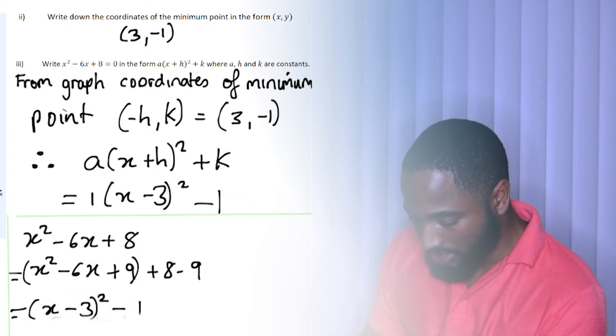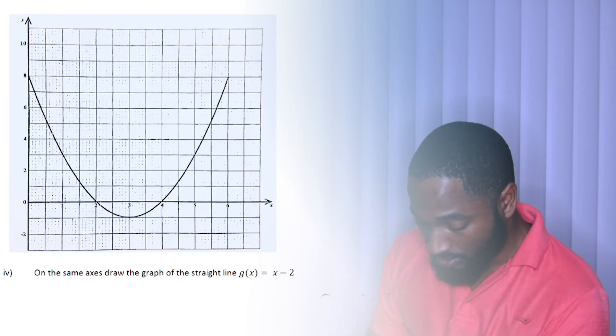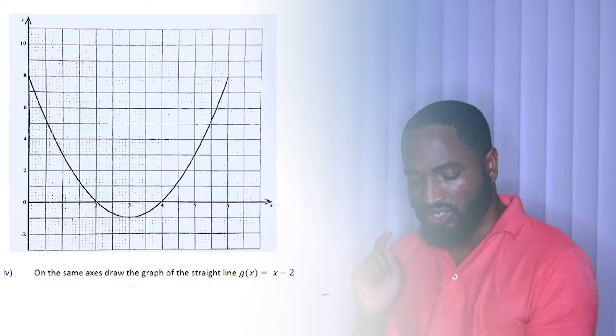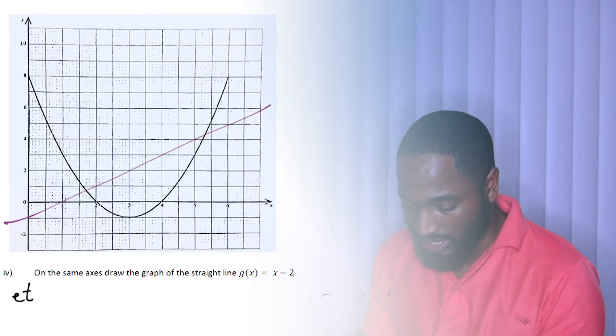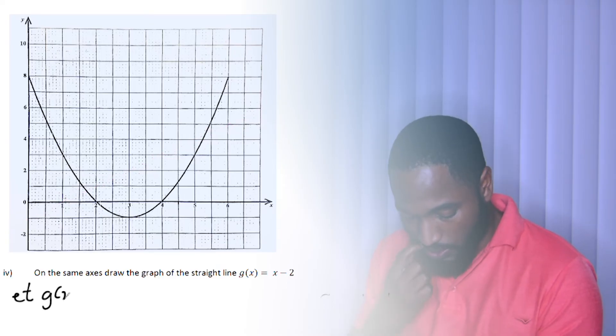Is there more to this question? Let's see. Oh, there's more. On the same axis, draw the graph of the straight line g(x) = x - 2. So x - 2, this is basically the line y = x - 2, so you could just substitute values of x and you'll get corresponding values of y. You'll be able to plot your line; it will come across something like that.